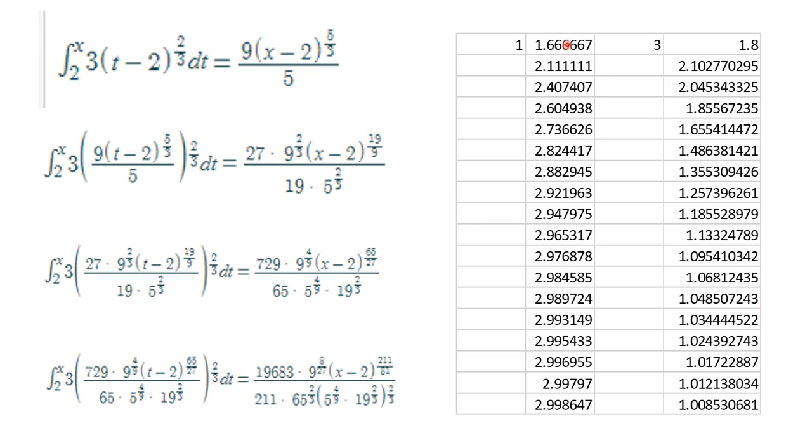When you plug in the numbers, this is what happens with the exponents—you can see that is going to 3. This is what happens with the constants, and they're going to 1. This is a numerical proof that the whole thing is converging, albeit somewhat slowly, to (x - 2)^3.